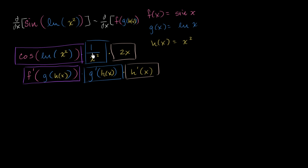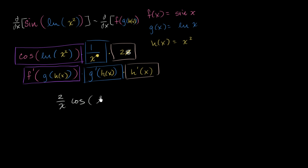All we have to do now is simplify. Rearranging the order of multiplication, we get 2x over x squared. We can cancel: 2x/x² = 2/x. So the final answer is 2/x times cosine of the natural log of x squared.